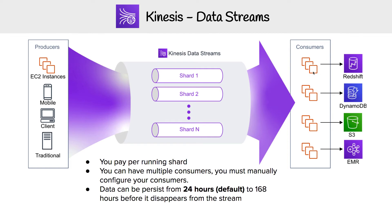The idea is you have these EC2 instances that are specialized to consume that data and then send it somewhere in particular. So we have a consumer specialized to sending data to Redshift, then DynamoDB, then S3, and then EMR. Whatever you want the consumer to send it to, it can send it wherever you want.